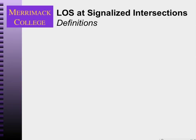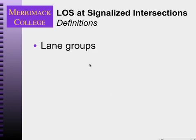I want to run through with you the highway capacity manual method for analyzing level of service at signalized intersections. We'll do a simple example and go through some of the big ideas. So there are some definitions that we need to talk about. First of all, lane groups — that's the unit of analysis.